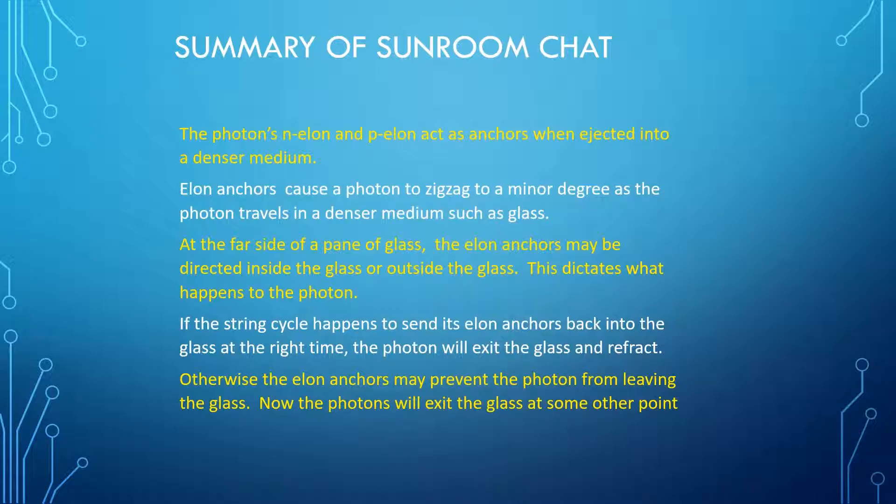The photon's N elon and P elon act as anchors when ejected into a denser medium. Elon anchors cause a photon to zigzag to a minor degree as the photon travels in a denser medium such as glass. At the far side of a pane of glass, elon anchors may be directed inside the glass or outside the glass. This dictates what happens to the photon.